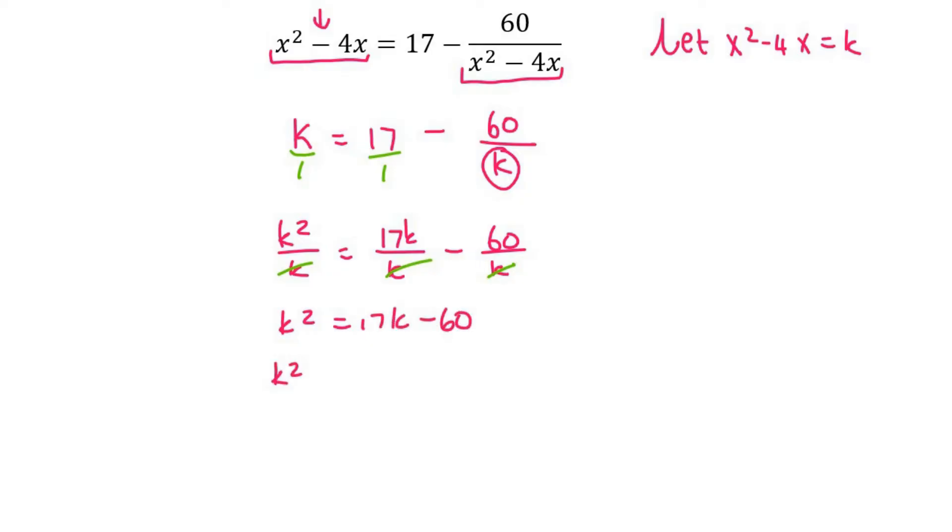We're then going to take it all to the left. Now this does actually factorize, but you could use the quadratic formula. It would be k minus 12 and k minus 5. I'll be honest, I didn't see that at first, I just used the formula. So k is 12 or k is equal to 5.